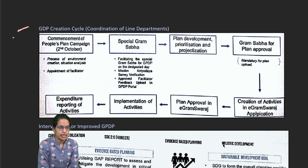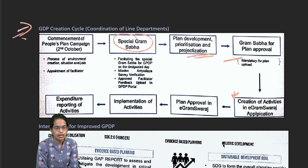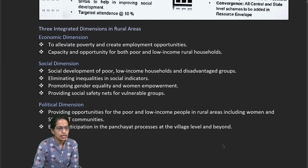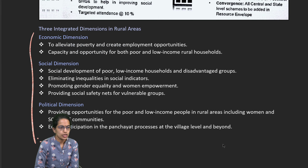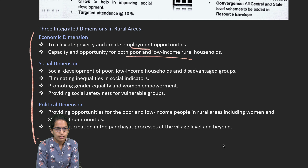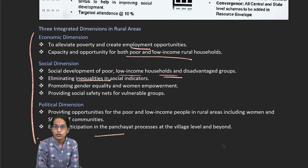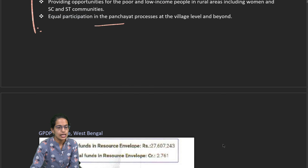The GDP creation cycle talks about the major role of Gram Sabha — it prioritizes and develops the project, approves the plan, creates the Gram Swaraj app, implements it, and reports the expenditure. Various dimensions of rural areas to be included are economic, social, and political. Economic dimensions talk about employment for poor and low-income rural households, reducing inequality, providing opportunities for minority groups, women, SCs/STs, and ensuring equal participation.